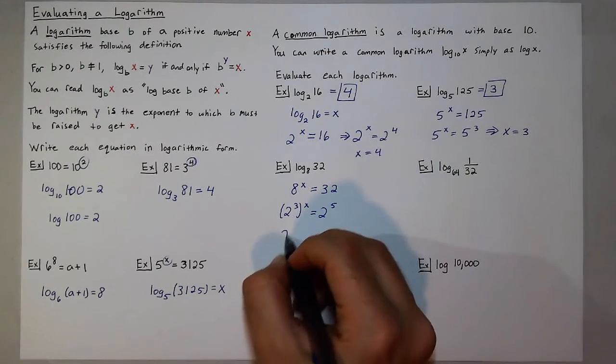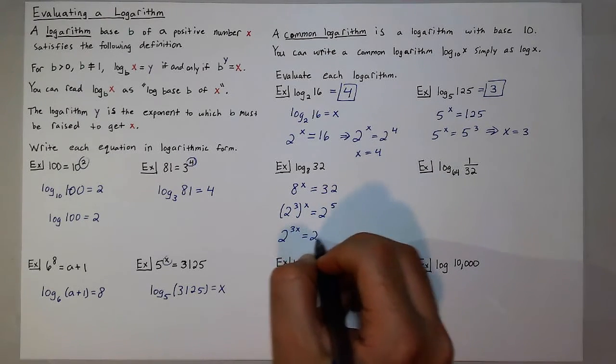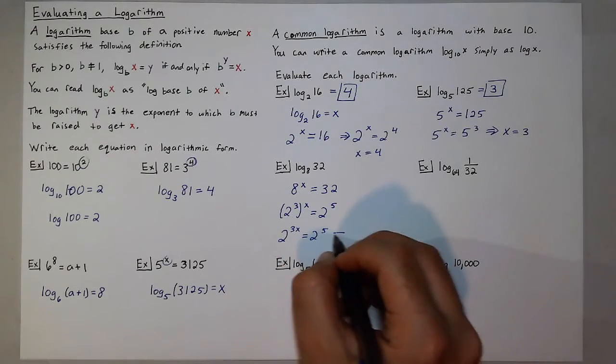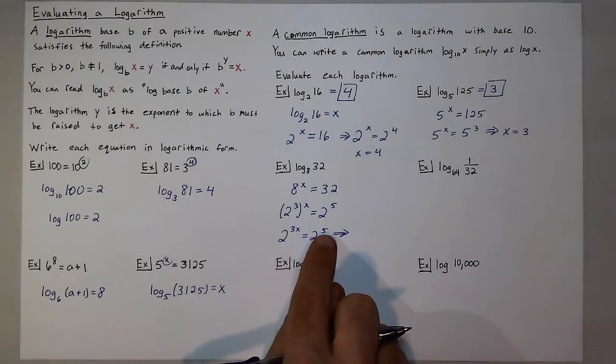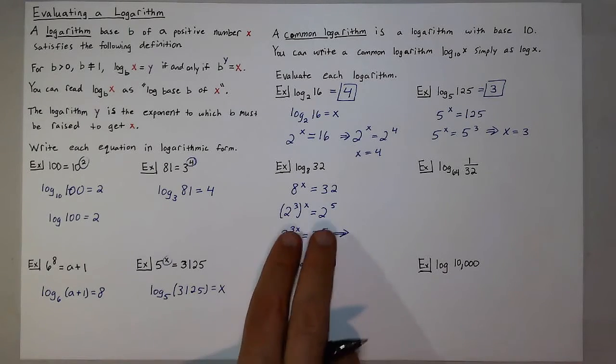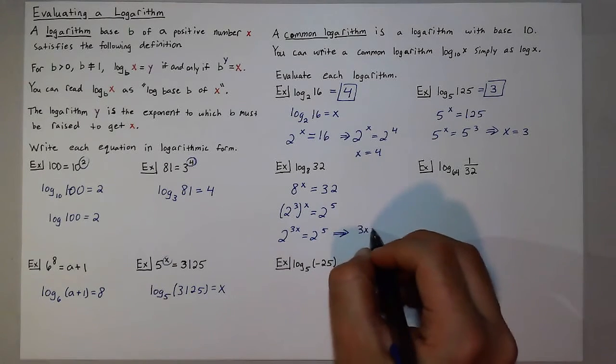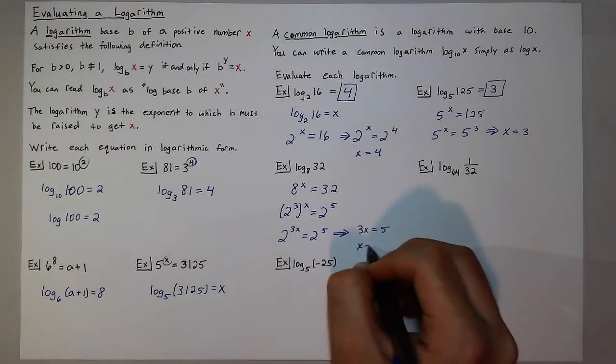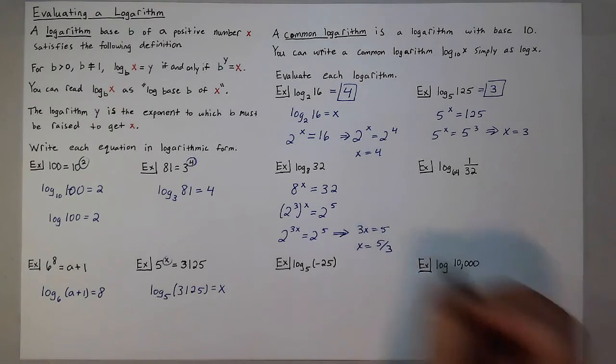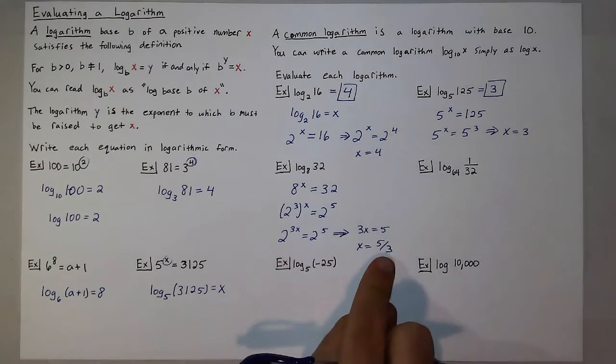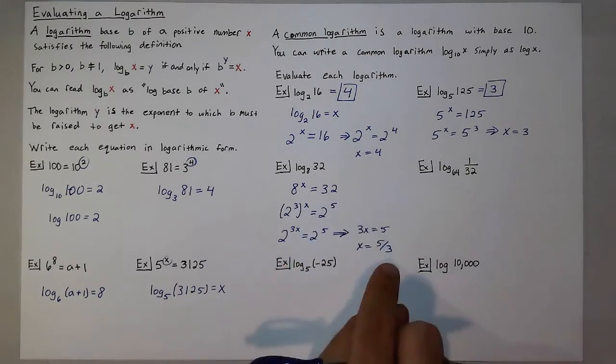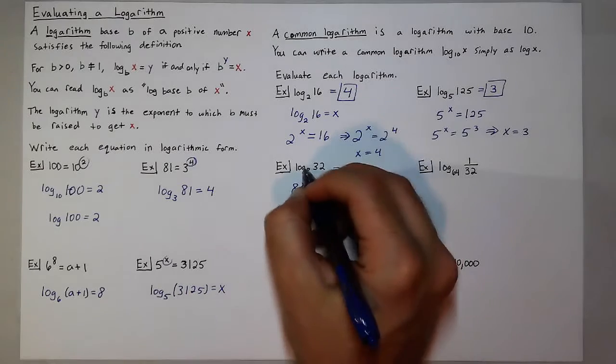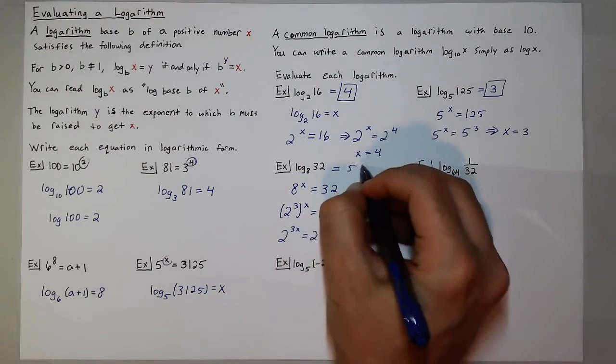And now, I have the statement 2 to the 3x is equal to 2 to the 5th. So what I can say here is that 3x is equal to 5 since those bases now match. And x is equal to 5 thirds. So that tells me that the power I raise 8 to to get 32 is 5 thirds. So log base 8 of 32 is 5 thirds.